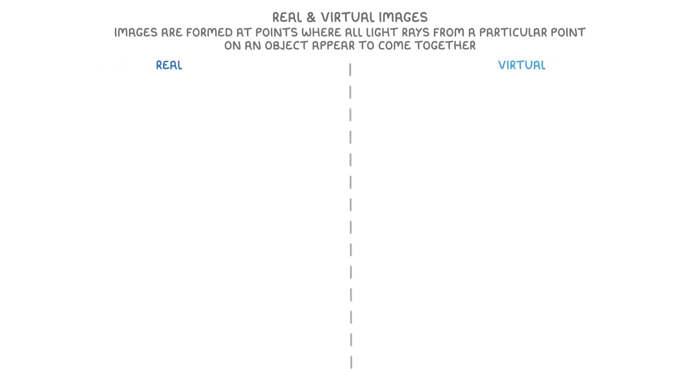The last thing we need to cover is the difference between real and virtual images, which to be honest is kind of a weird concept, so just bear with us and hopefully it'll make sense. Now regardless of whether it's real or virtual, images are formed at points where all the light rays, from a particular point on an object, appear to come together.